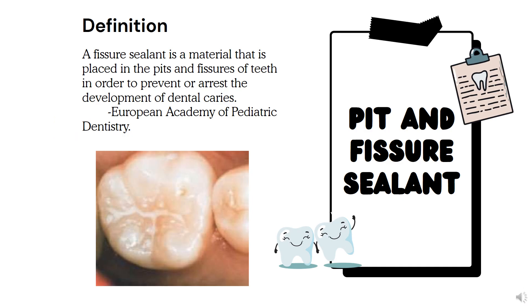Moving on to the pit and fissure sealant — it is a material. The definition: a fissure sealant is a material that is placed in the pits and fissures of the teeth in order to prevent or arrest the development of dental caries. Other preventive procedures include atraumatic restorative technique (ART), preventive resin restoration (PRR), and topical fluoride application with 1.23% APF gel. This definition was given by the European Academy of Pediatric Dentistry. Remember: pit and fissure sealant is a preventive procedure.